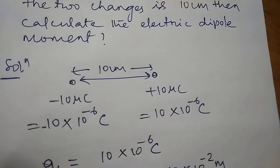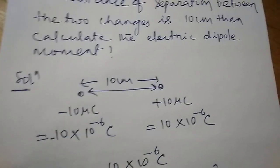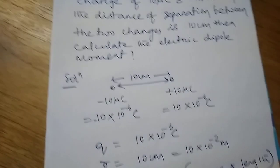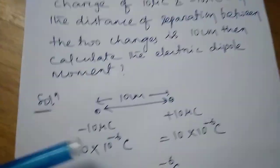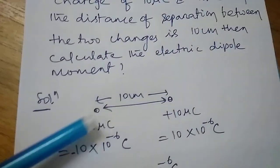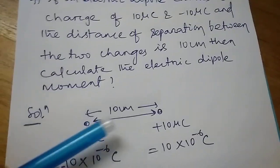First we have to draw a diagram. So the diagram suggests one side carries minus 10 microcoulomb charge and another side carries 10 microcoulomb charge, and the distance of separation between the two charges is 10 cm.